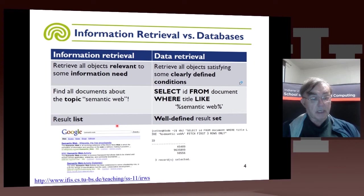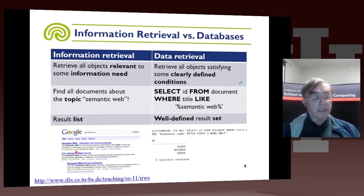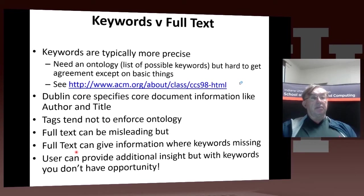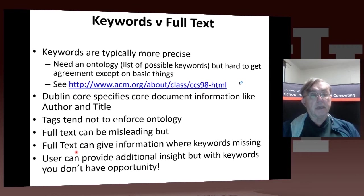If you type 'semantic web' at Google, it gives you back Wikipedia as the top link, and then the W3C activities. These two are possibly the most significant semantic web links if you're actually interested in the topic. This also illustrates the difference between information retrieval and databases.